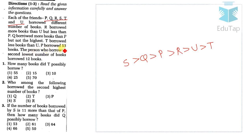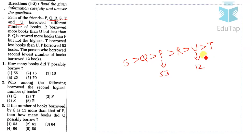P has borrowed 53 books. The person who borrowed the second lowest number of books borrowed 12, and that is U, so U borrowed 12 books. For question 1, T must borrow less than 12. The only option less than 12 is 10, so the answer for question 1 is option 3: 10.